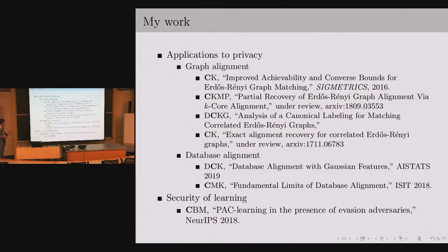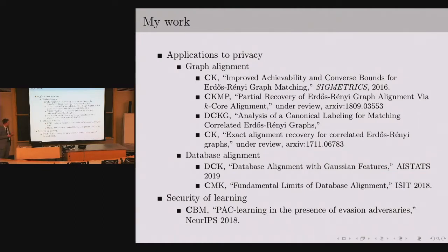The work in this talk falls into two broad categories. First, I'll talk about the privacy-motivated problem of graph alignment, with a briefly mentioned related problem called database alignment. Then at the end of the talk, I'll discuss a problem in security of machine learning.